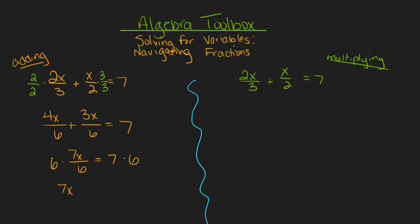That will give me 7X equals 42, and then we can divide by seven on both sides to break the multiplication relationship between seven and X to give us X equals six.